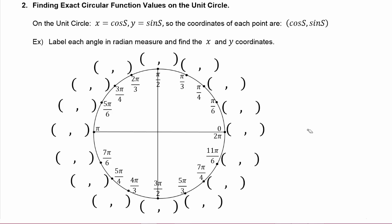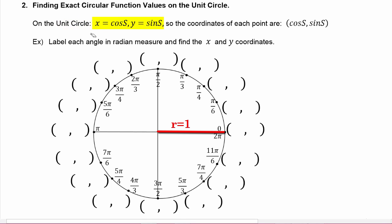Just a reminder: the unit circle has a radius of one unit, and the circular function definitions tell us that x is the cosine of s and y is the sine of s. That means as you go around the unit circle, the x coordinate is whatever the cosine of s is at that point, and the y coordinate is whatever the sine of s is there. So when we look at s equals zero...